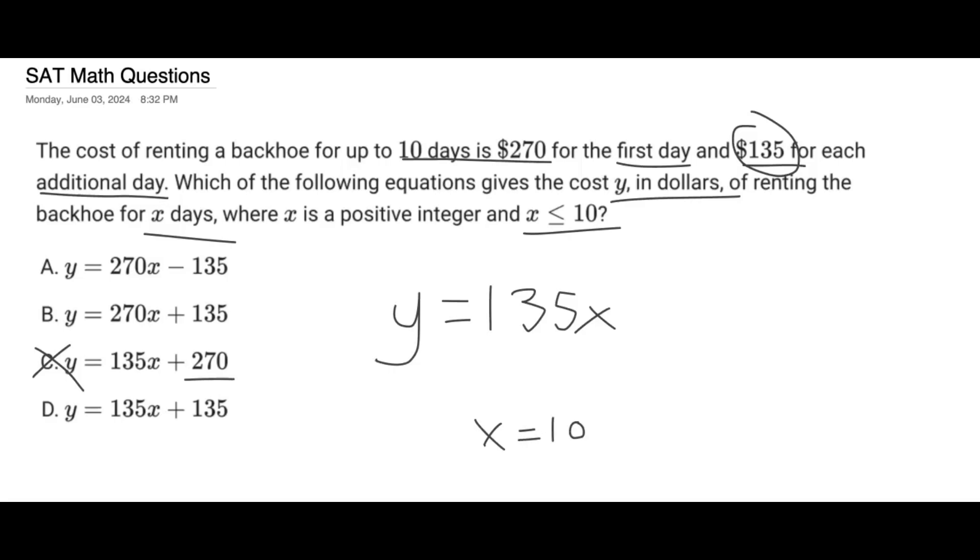So what we get is 10 times 135, right? So this would give us 1,350. All right. So that's a very large number.